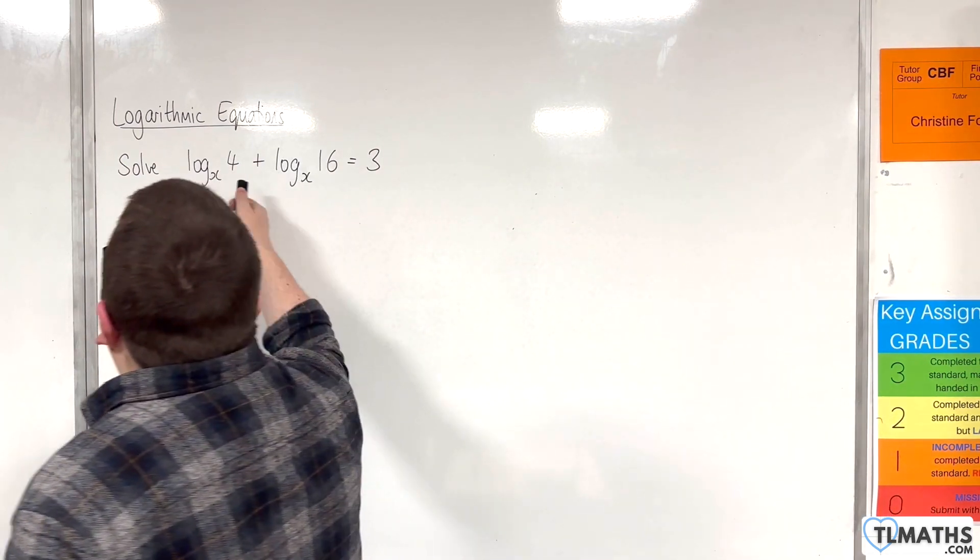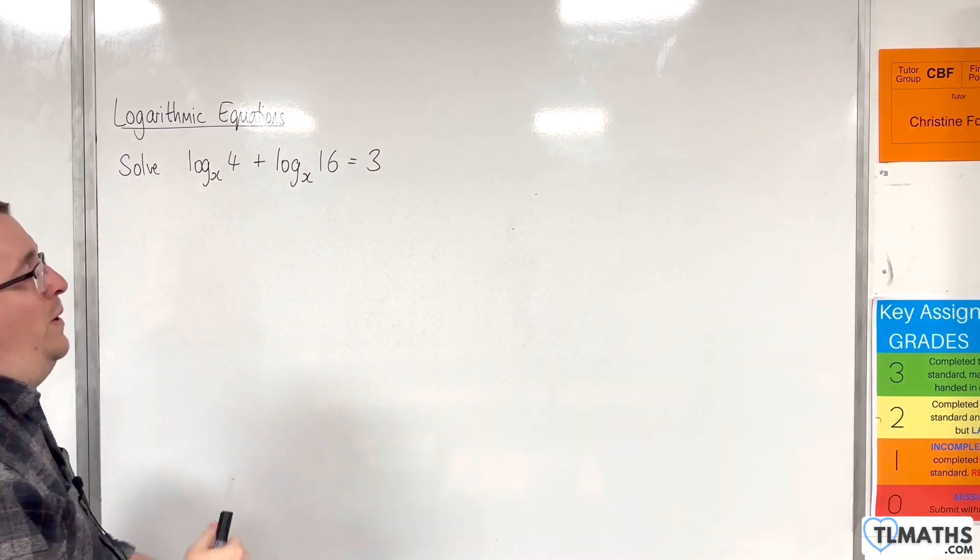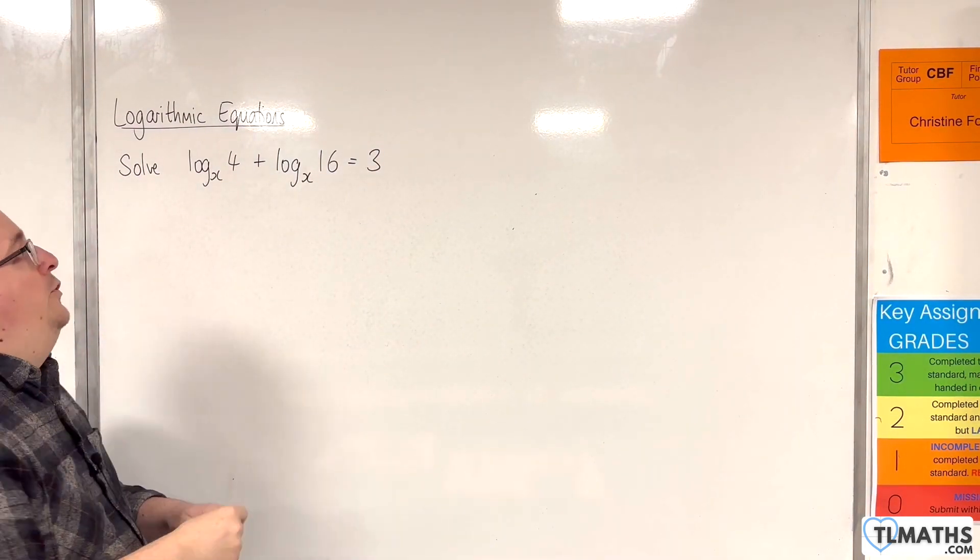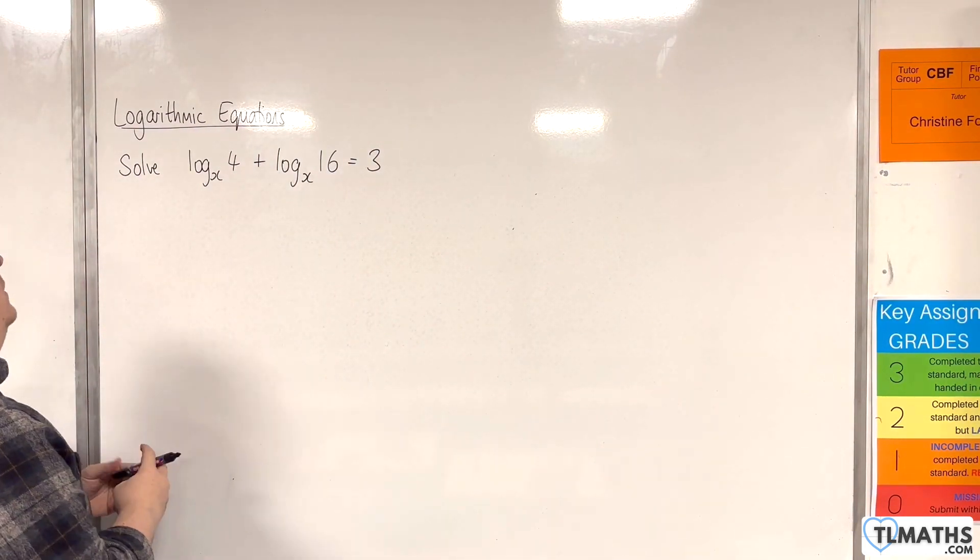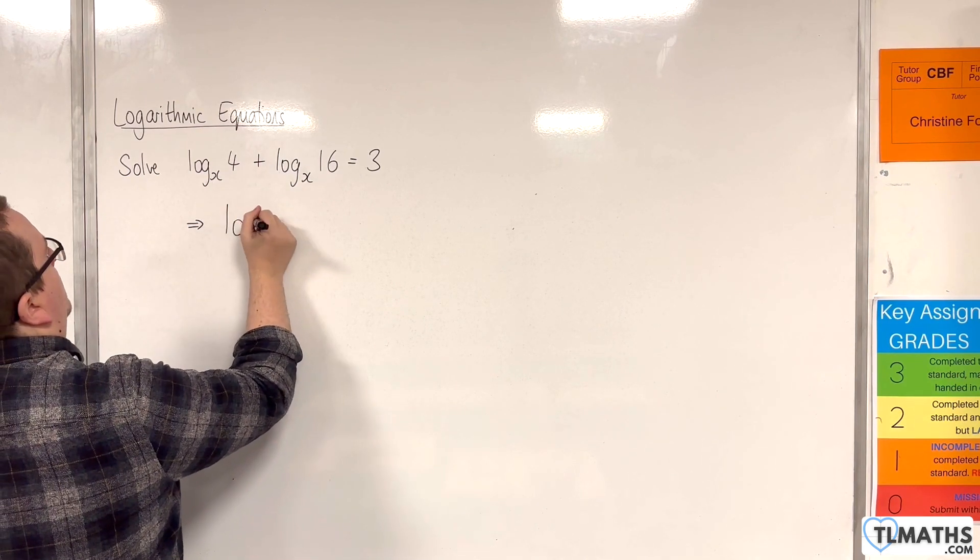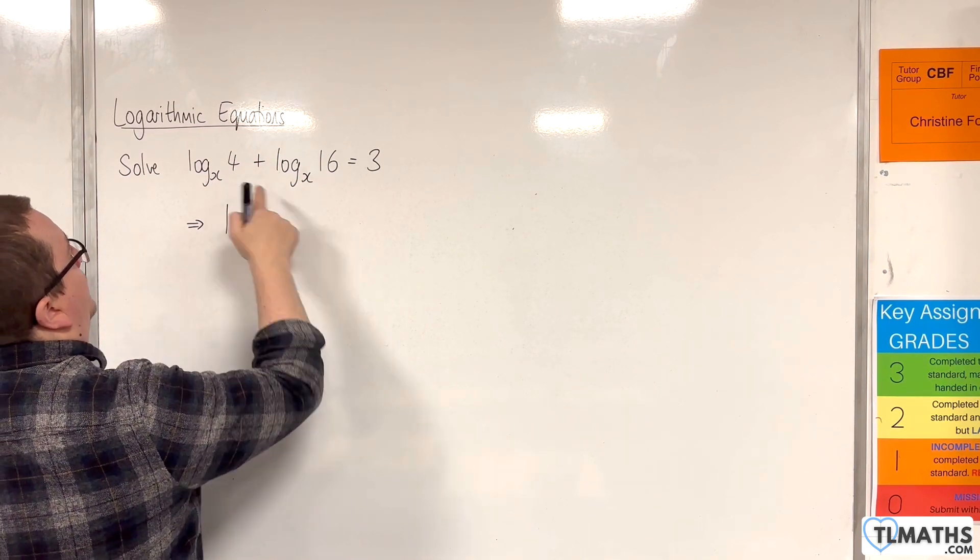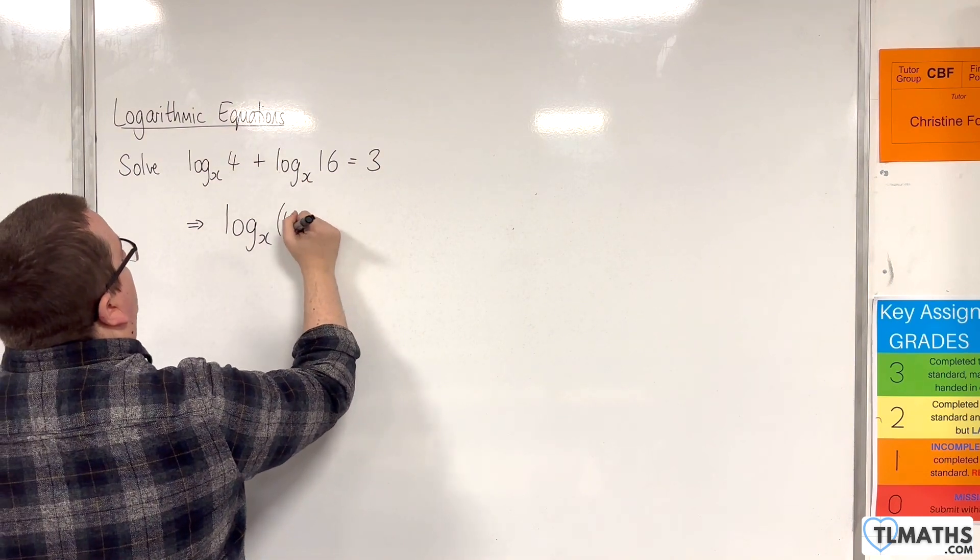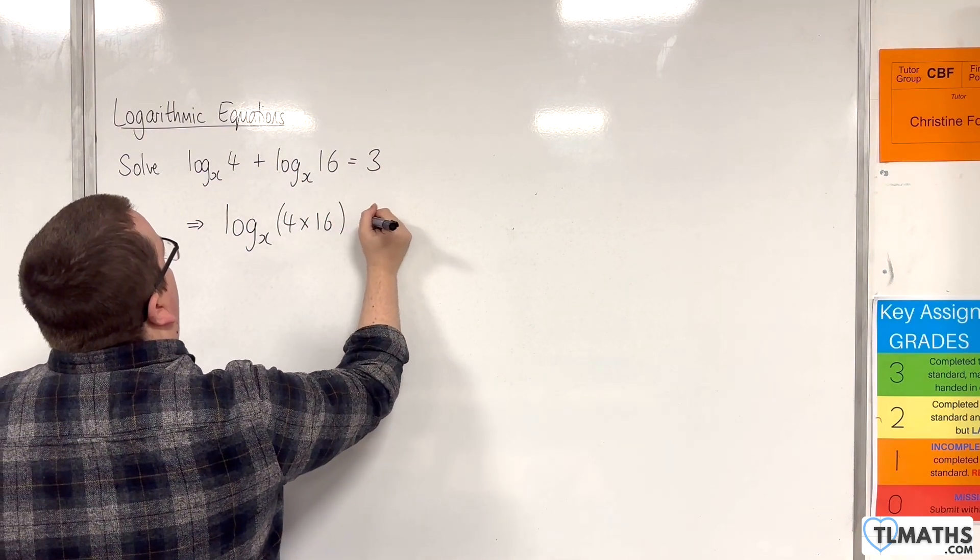Now, because these two logarithms have the same base, we can use the product rule to bring them together. So we can write that as log base x of 4 times 16 is equal to 3.